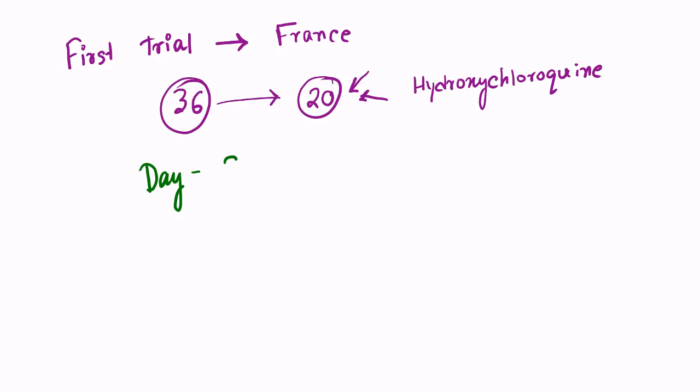At day 3, the study reported 50% of the treated group turned from positive to negative for coronavirus. By day 6, 70% tested negative.